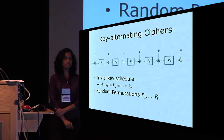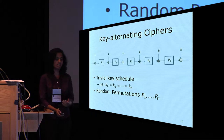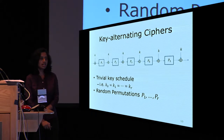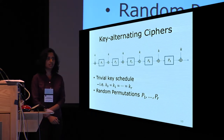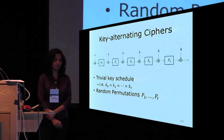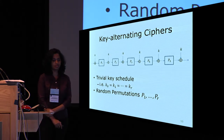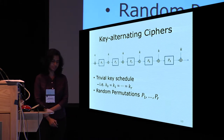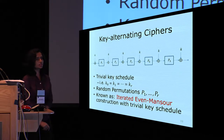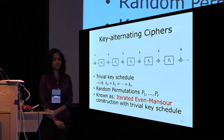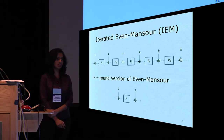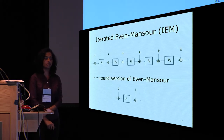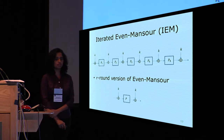In this talk we consider key alternating ciphers with a trivial key schedule, meaning all round keys are identical — just k. The round permutations p1 through pr are uniform random independent permutations. This is known as the iterated Even-Mansoor construction with trivial key schedule, as it is an r-round version of the Even-Mansoor cipher.